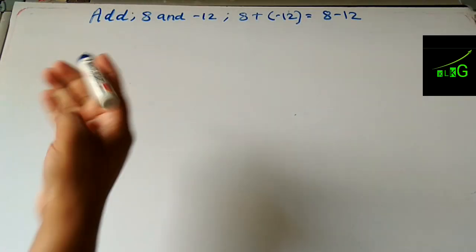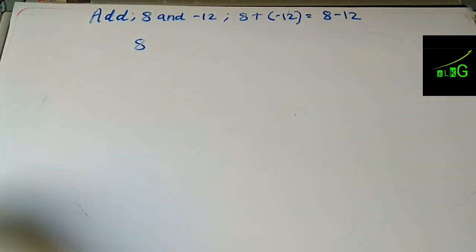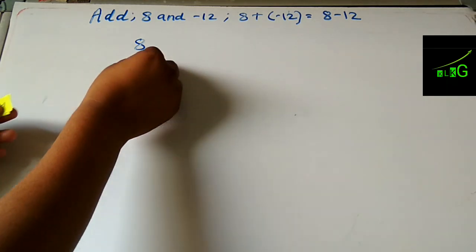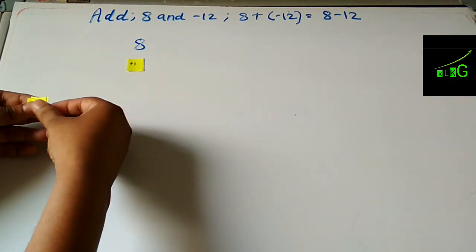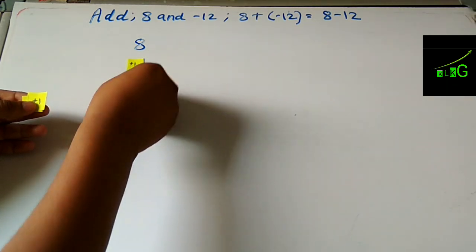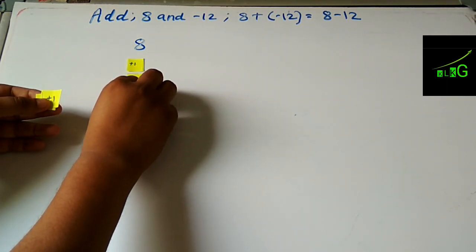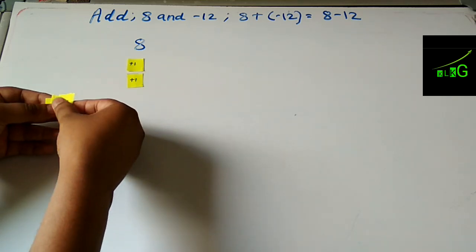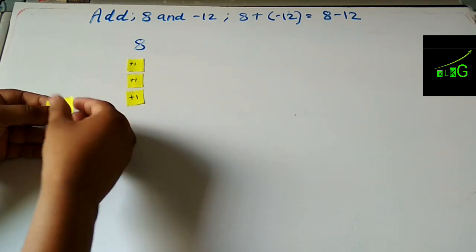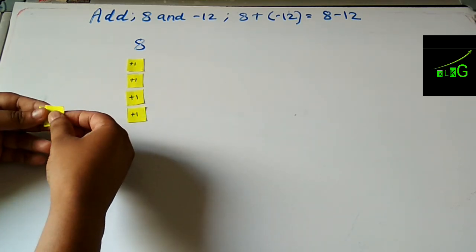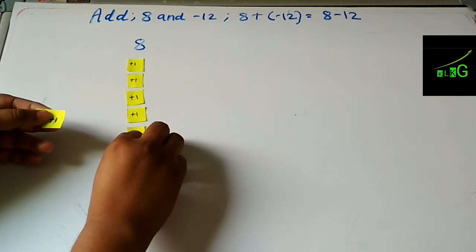Here we have to add eight and minus twelve, so eight plus minus twelve equals eight minus twelve. We will put eight strips of plus one here in a vertical column.